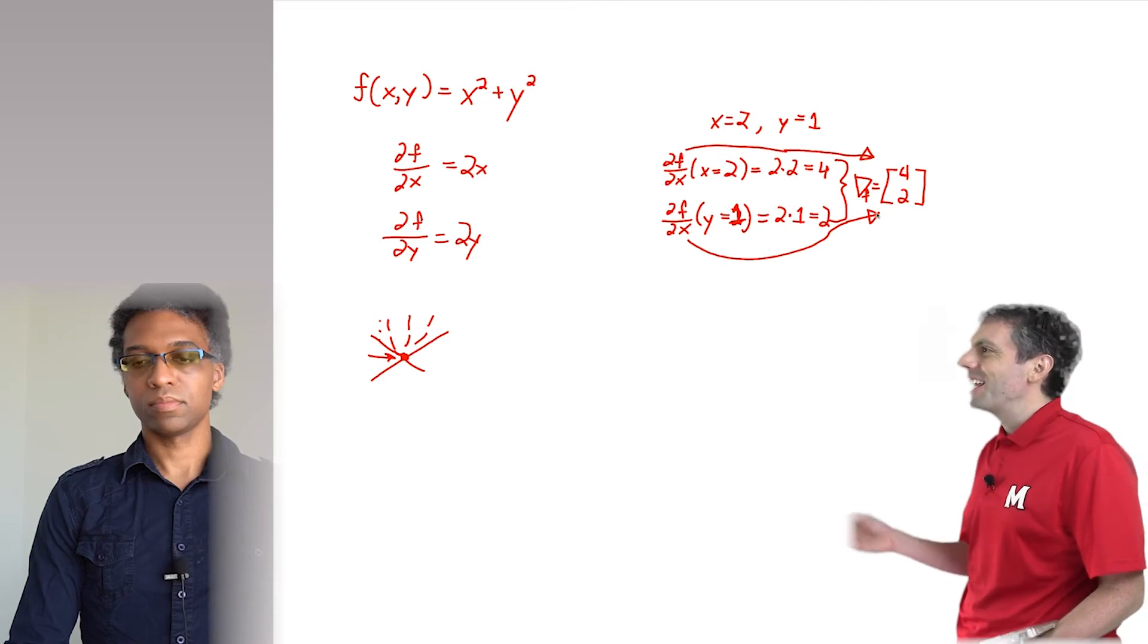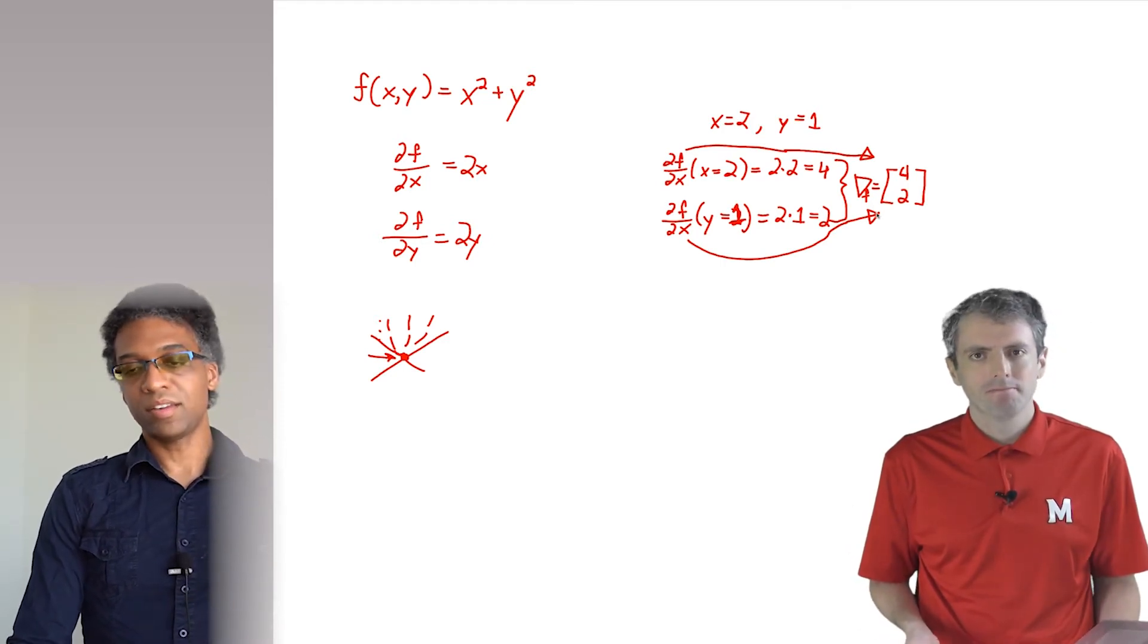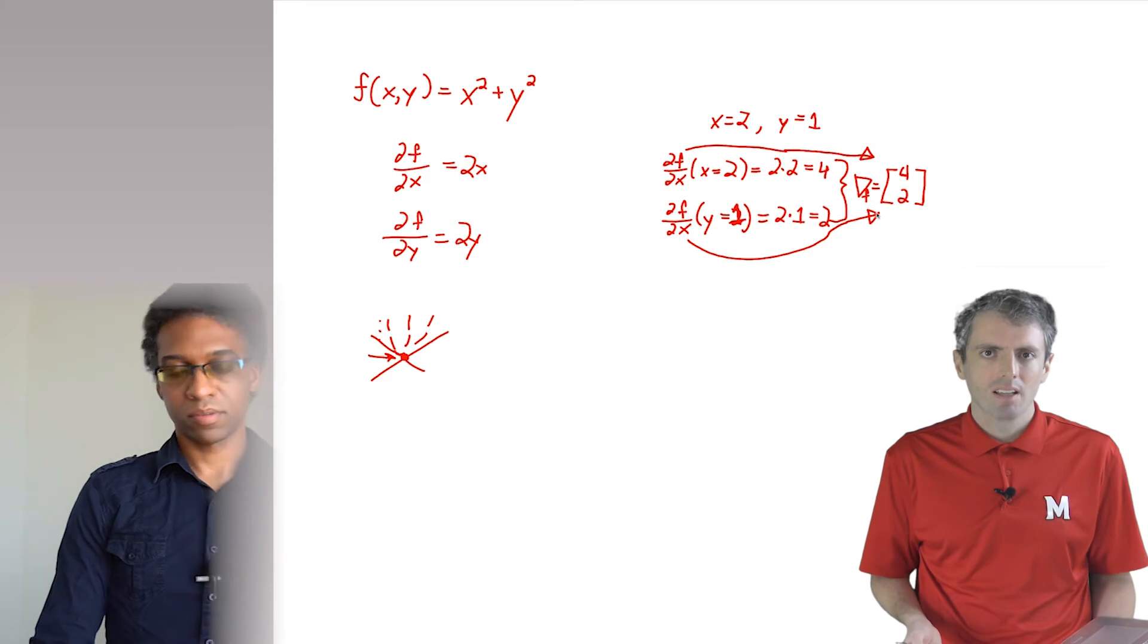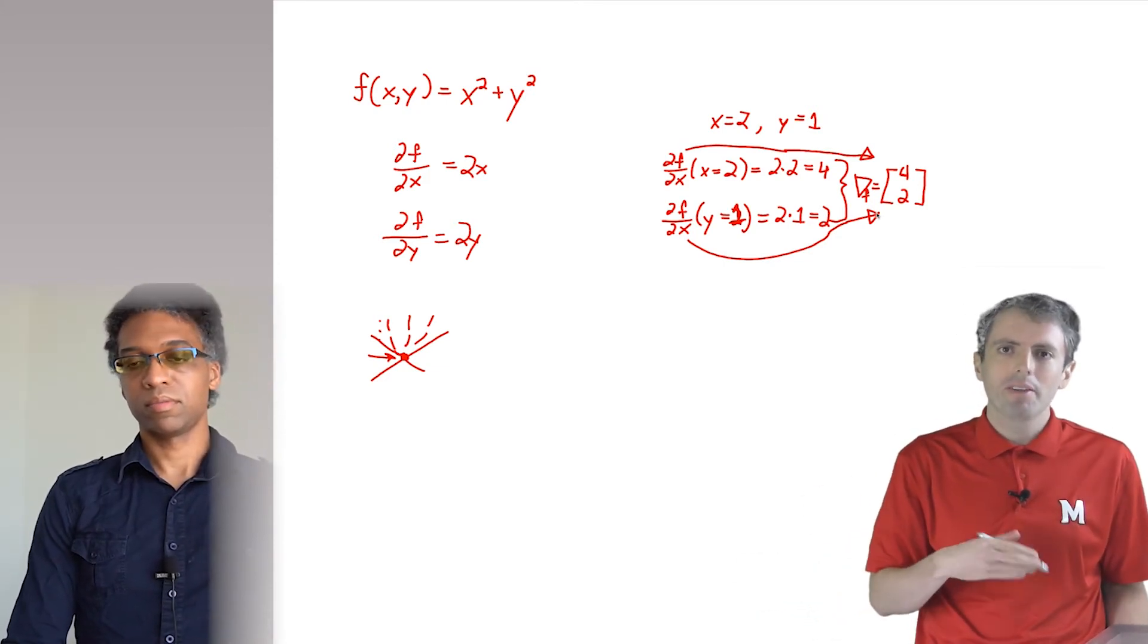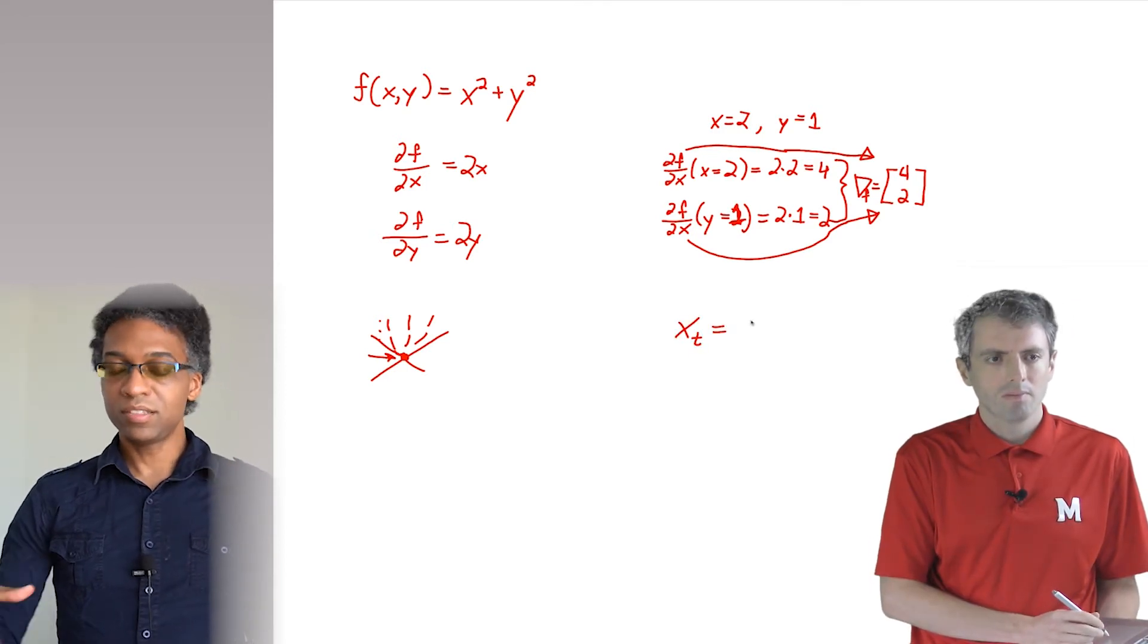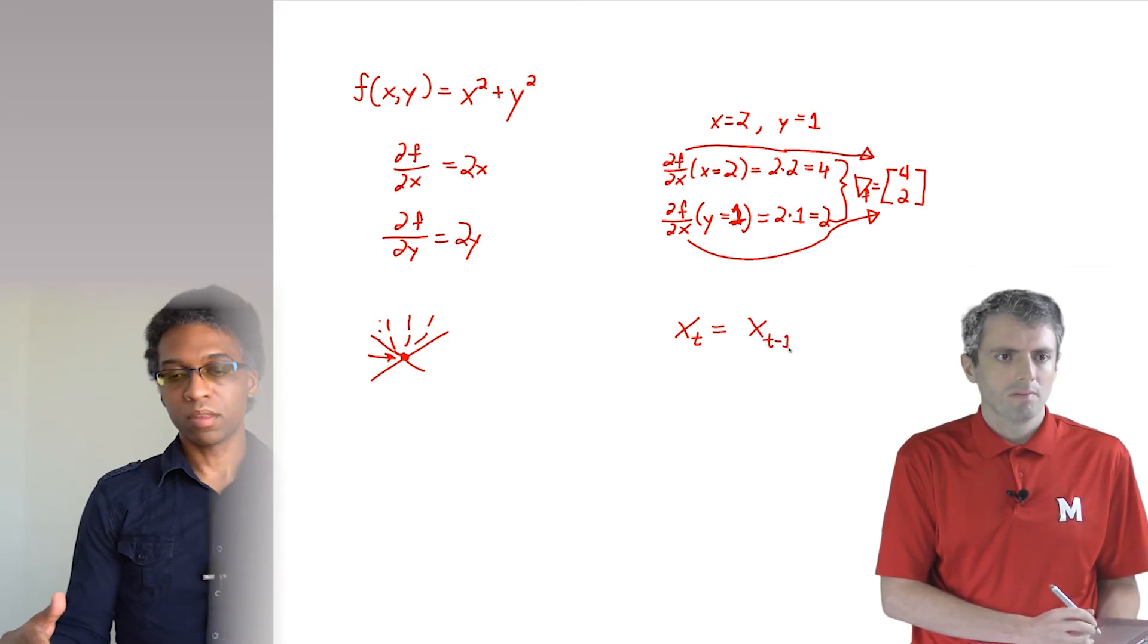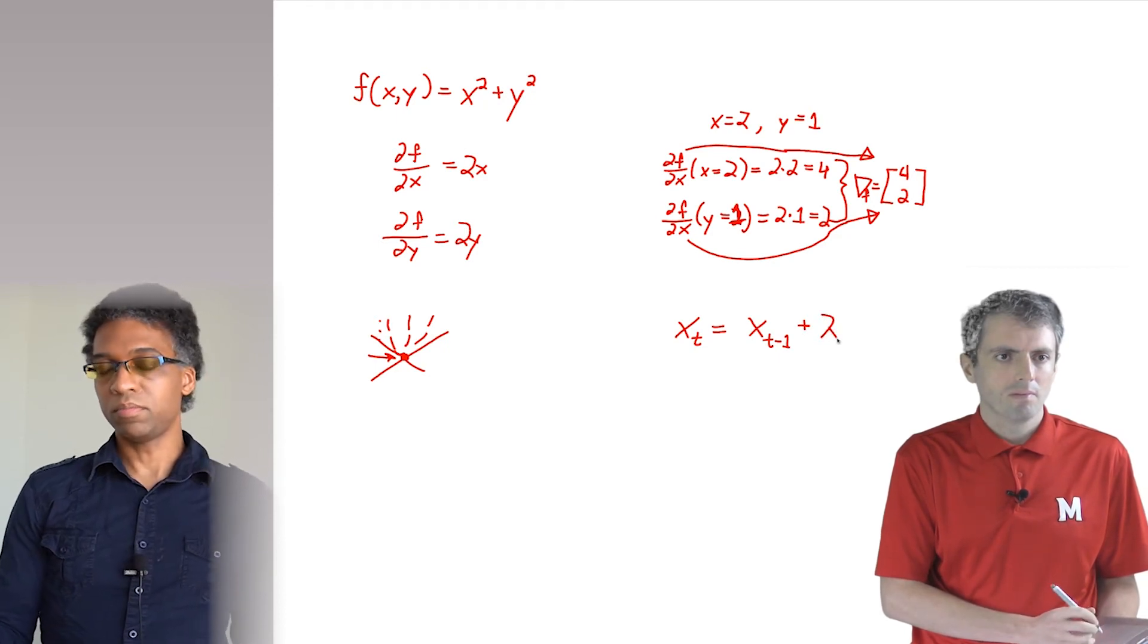But we're trying to make f small, not big. Right. So we can just take the negative of the gradient and move in that direction instead. Negative 4, negative 2. But that vector points way beyond where we know the minimum is. That's right. To optimize a function, we need to take tiny steps. So we usually find the gradient by multiplying it by a small number. Maybe in this case we'll use a step size of 0.5.